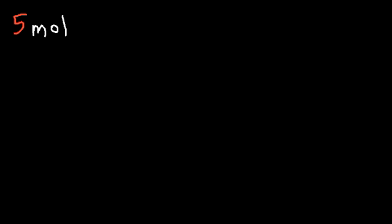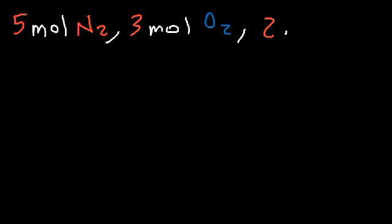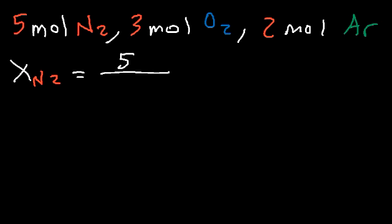Let's go over an example. We have five moles of nitrogen gas, three moles of oxygen gas, and two moles of argon. Calculate the mole fraction of these three gases. Starting with nitrogen gas, the mole fraction is the moles of nitrogen, which is five, divided by the total moles. Five plus three plus two is ten, and five divided by ten is 0.5.